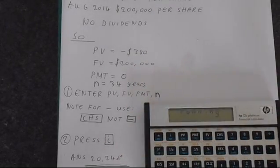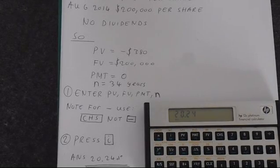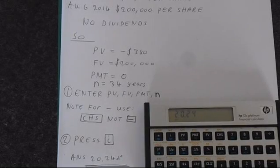Press I and the calculator does all of that calculation and gets 20.24%. So that is the compound annual growth rate of Berkshire Hathaway between 1980 and 2014. That's a very impressive investment track record.